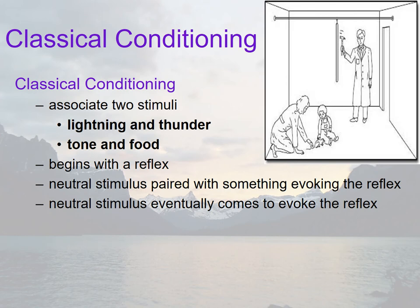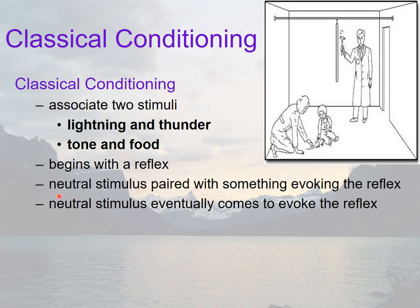Let's get into more detail about what classical conditioning looks like. We're associating two stimuli. The lightning comes before the thunder — the thunder is what's really loud and scary and causes our muscle tension. But if the lightning is paired with and precedes the thunder enough times, we might see a lightning strike and start to tense up anticipating the thunder. That's one example of classical conditioning. We can also do tone and food, which is what Pavlov did. The key is it starts with a reflex — something that naturally happens. Loud noises cause a fear reflex, but if something comes before that loud noise and we learn to associate those two together, now that previously neutral thing is not neutral anymore after learning because it causes a response.